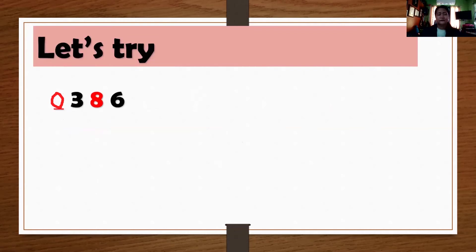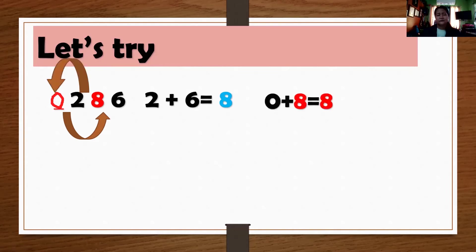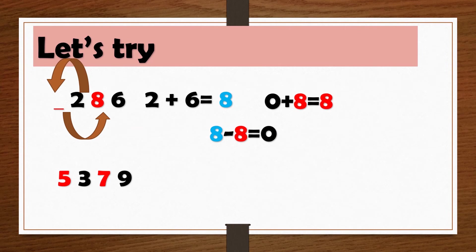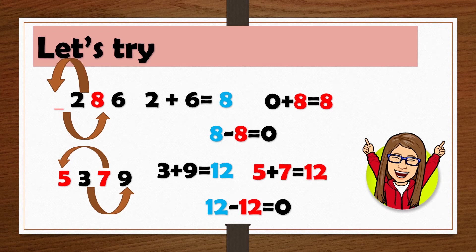So let's try this. I have only two numbers. I want you to try it. Okay, let's see your answer. Correct. 2 and 6 is 8, and 8 plus 0 is 8, and 8 minus 8 is 0. Correct. So 3 plus 9 is 12, and 7 plus 5 is 12, and 12 minus 12 is 0. Correct. You're correct.